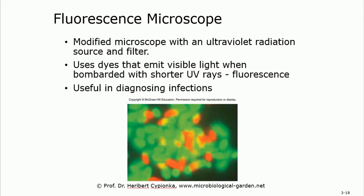The next type is the fluorescence microscope. It is basically the same as the light microscope but modified: instead of a regular light source, it uses ultraviolet radiation with a filter, and you must use certain dyes to see. Fluorescence microscopy is important for diagnosing infections — for example, if you have a specimen from a hepatitis infection, you get a swab, put it on the slide, and the fluorescence microscope with ultraviolet radiation will help you identify it.